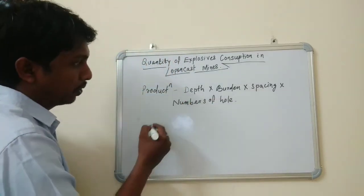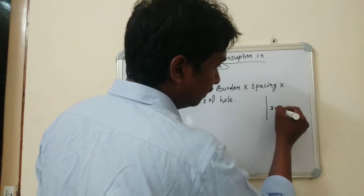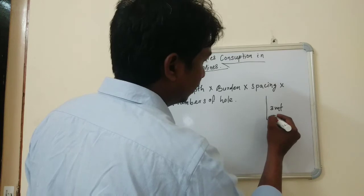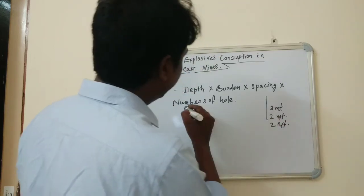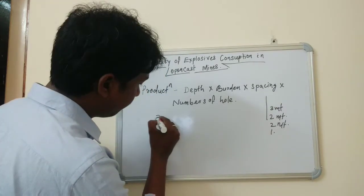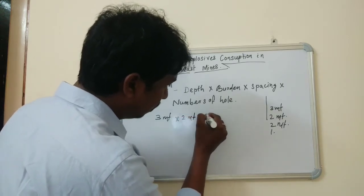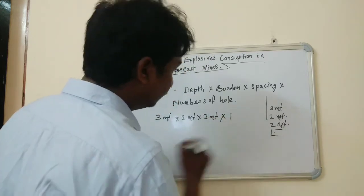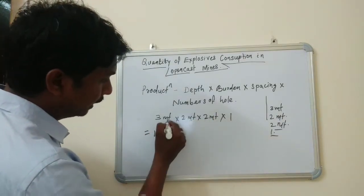Suppose depth is 3 meters, burden is 2 meters, and spacing is also 2 meters. With 1 hole, the calculation is 3 × 2 × 2 × 1, which equals 12 cubic meters of production.